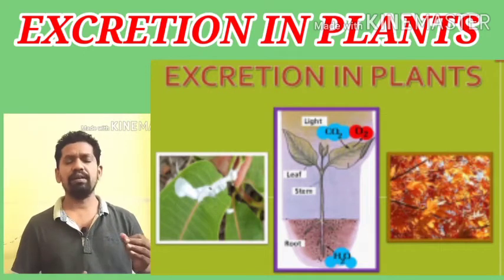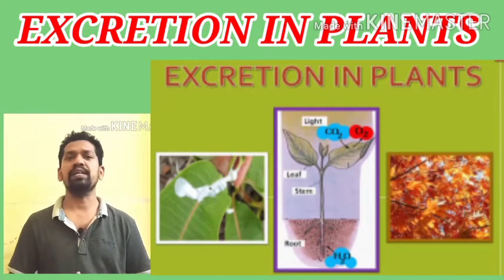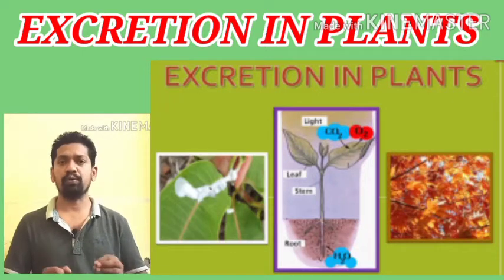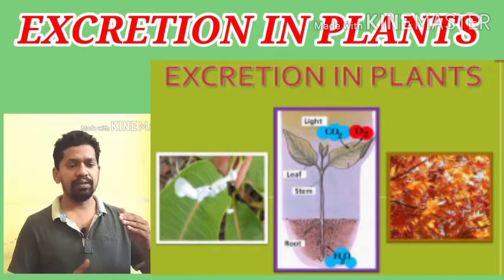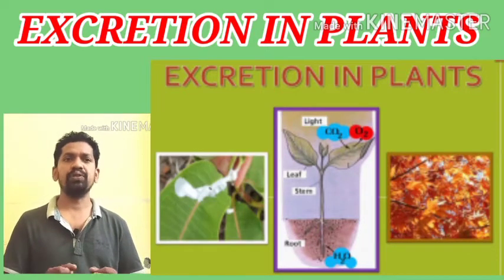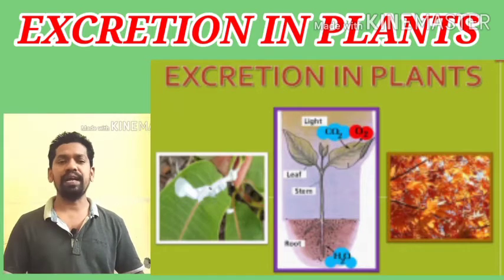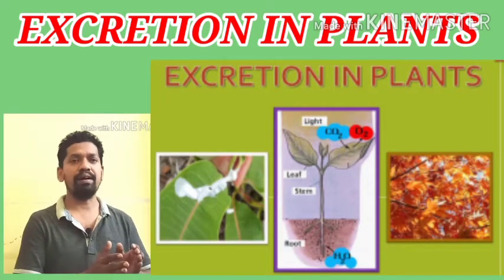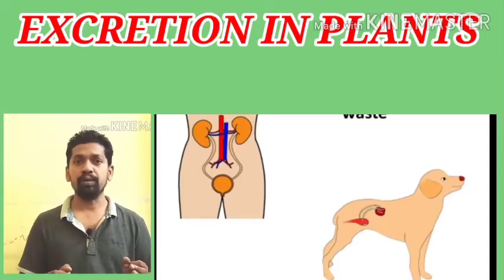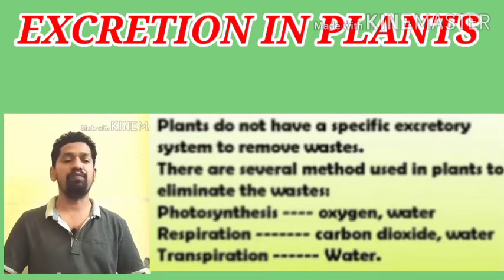As we know, in all organisms, due to various metabolisms, some waste materials are always formed. In plants also, some wastes are formed. Plants prepare different types of substances for growth and development, and some of those substances are waste materials. But plants don't have a specific organ for excretion — they don't have kidney-like organs or any particular system for excretion.